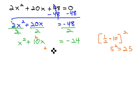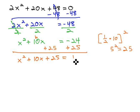So, what we're going to do is add 25 to both sides. This gives us x squared plus 10x plus 25 equals 1.